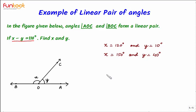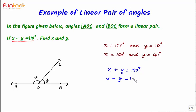So for solving this question, we have a constraint that we cannot select the values of X and Y arbitrarily. Values of X and Y should be selected such that X plus Y, because they form a linear pair, should be equal to 180 degrees, and X minus Y should be equal to 110 degrees. Now we can solve these two equations and find the values of X and Y.